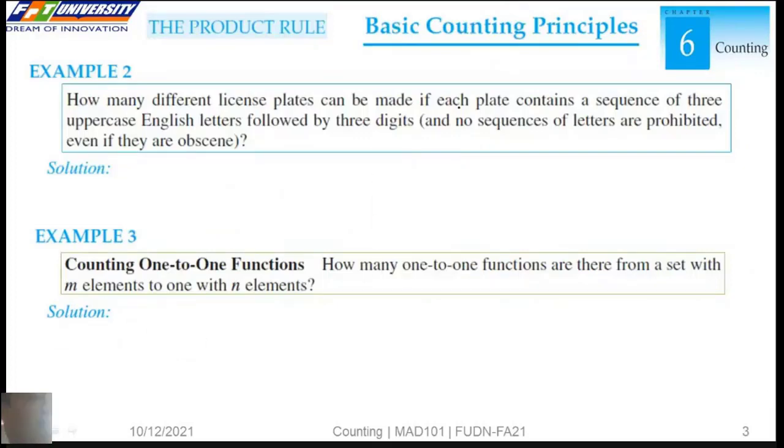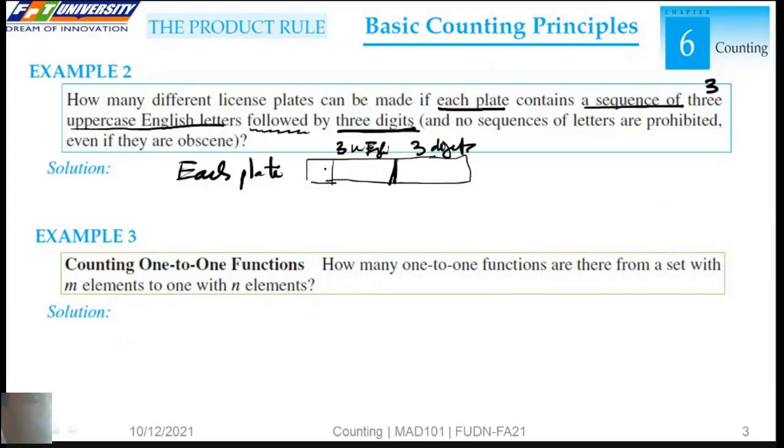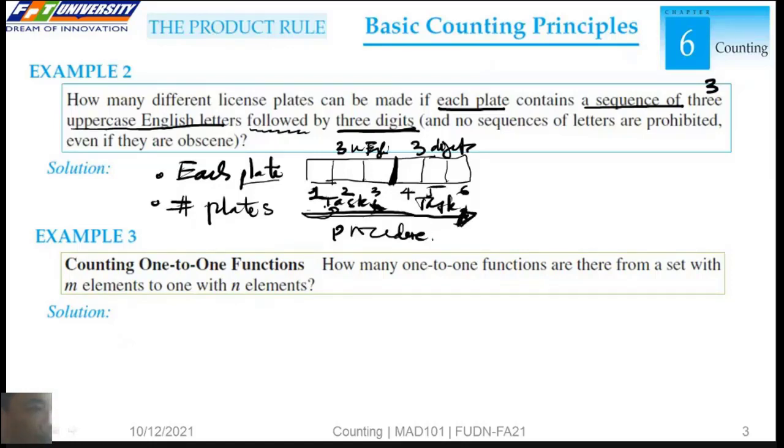Example 2: The license plate contains a sequence of three uppercase English letters followed by three digits. One letter, two letters, three letters, then we have one digit, two digits, three digits. We can think this is task one, this is task two, or maybe this is task one, task two, task three, task four, task five, task six. The procedure contains six tasks.